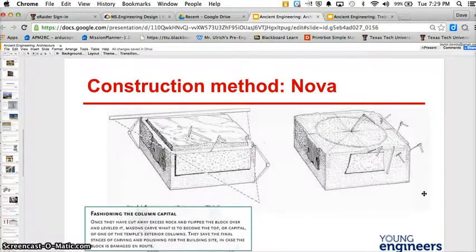Next is fashioning the column capital. And this was partially done at the quarry site and then completed later on at the Acropolis.